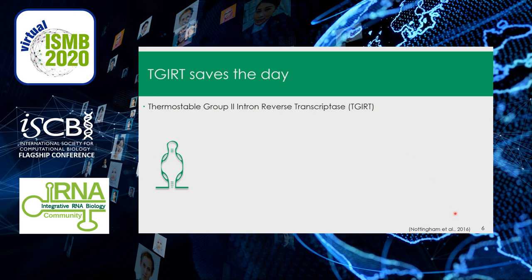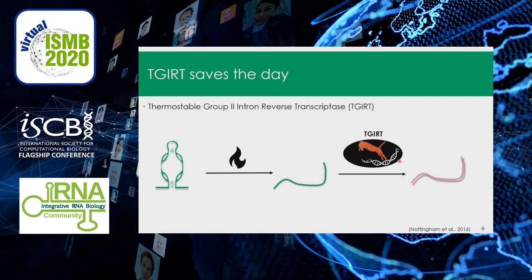However, a group developed in 2016 an RNA-seq method called TGIRT-seq, which uses a thermostable reverse transcriptase. This allows RNA molecules to be heated more, which denatures their structure easily. At high temperature, TGIRT works well, so it can accurately reverse transcribe all kinds of RNA biotypes including structured ones such as snoRNAs, as well as all other types in one sample.